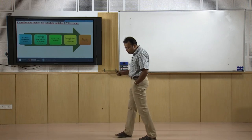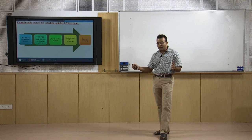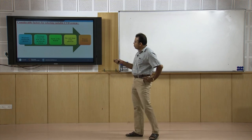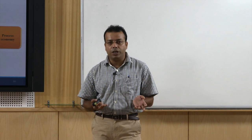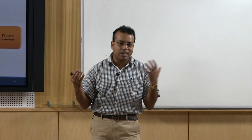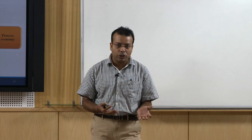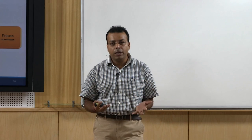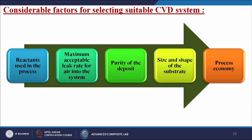Considerable factors for selecting a CVD process include: the reactants used, maximum acceptable leak rate for air into the system, purity of the deposit, size and shape of the substrate, and process economy — whether the process is expensive or cheap, what substrate material is used, whether the reaction between reactive gases and substrate can occur, the pressure conditions required, and which energy source is compatible with the material. Based on all these factors, one must choose the appropriate CVD mechanism for the particular substrate.